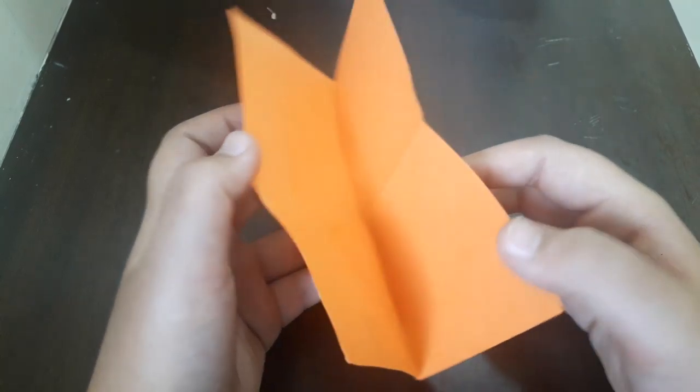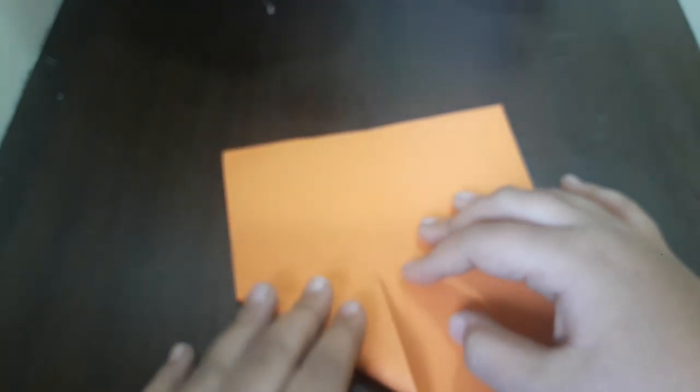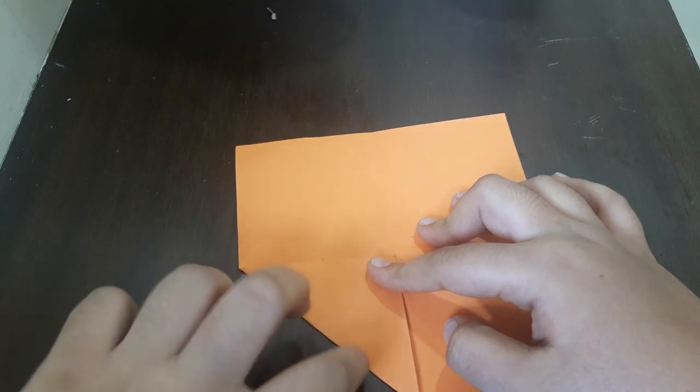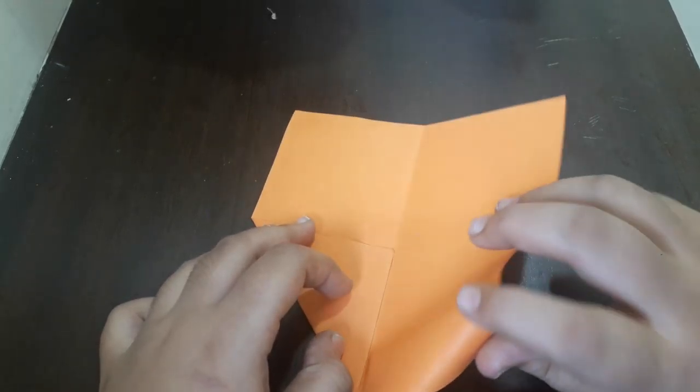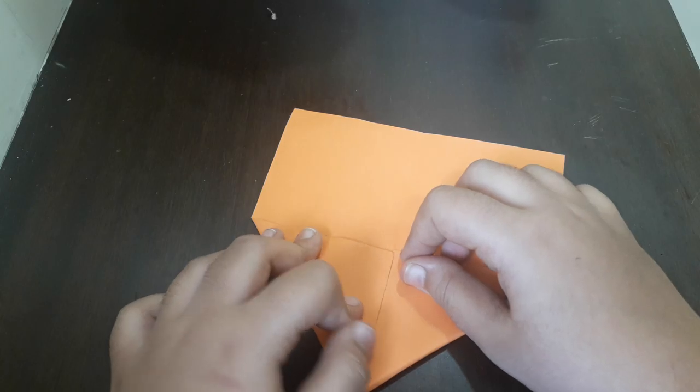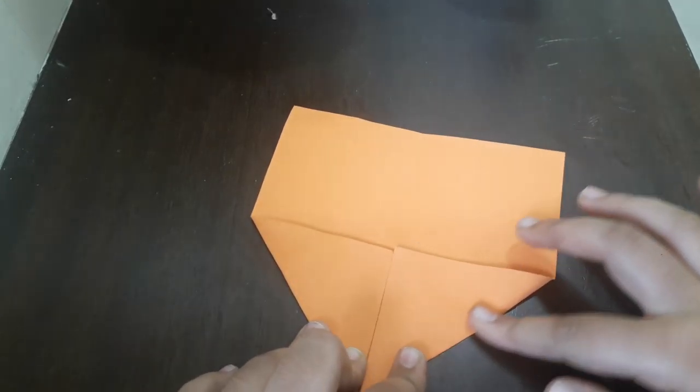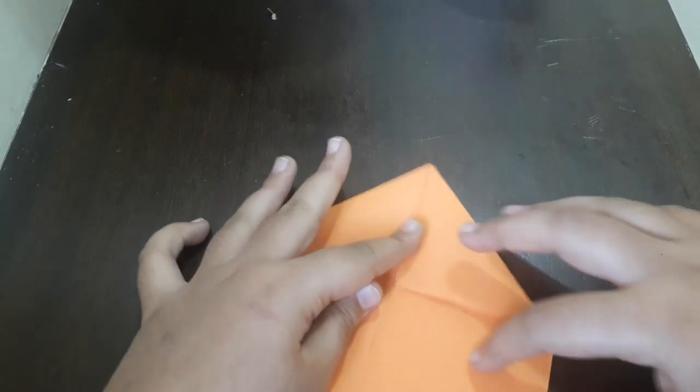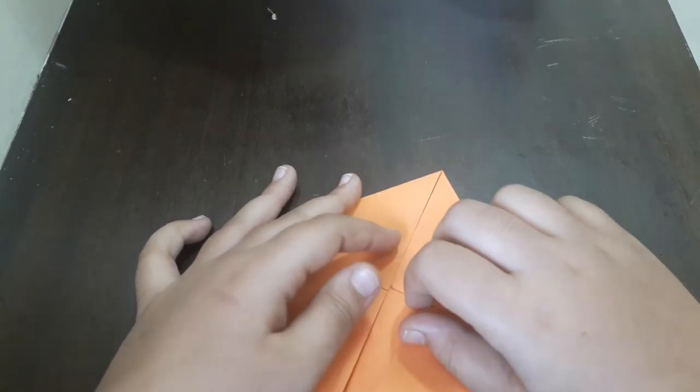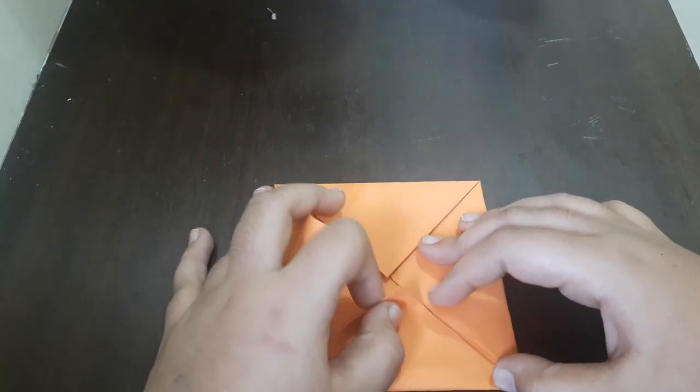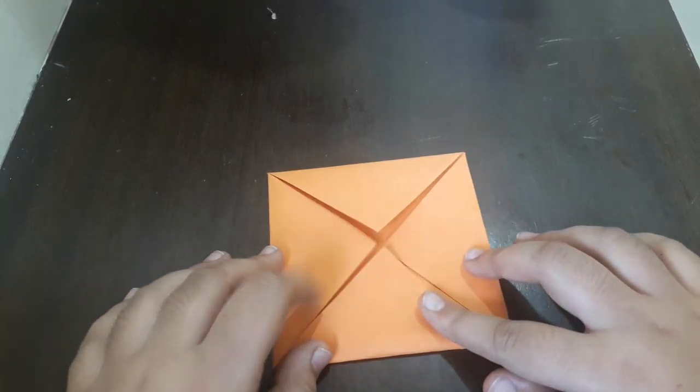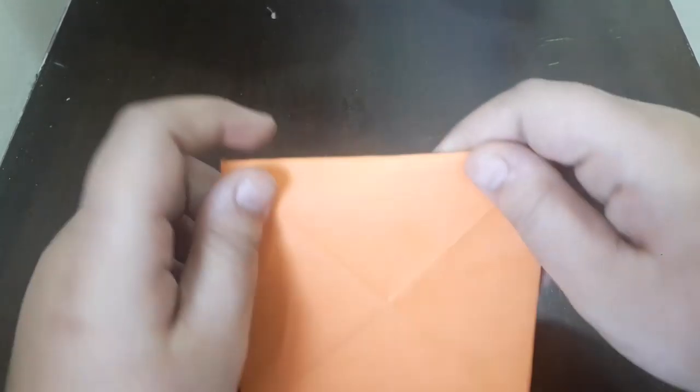Open it. You can see the lines. After seeing the lines, fold it into half. Repeat the same thing for four sides. You'll get a shape like this. Let it be like this and turn it back.